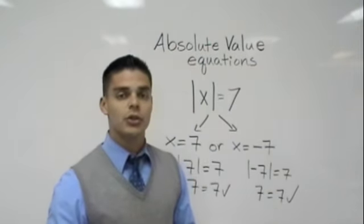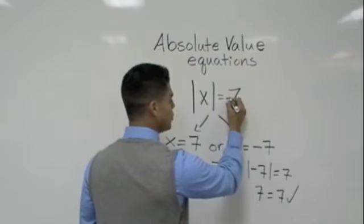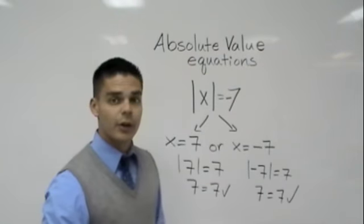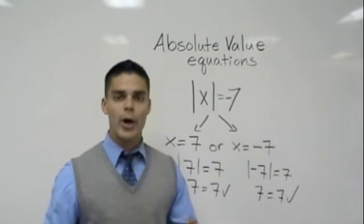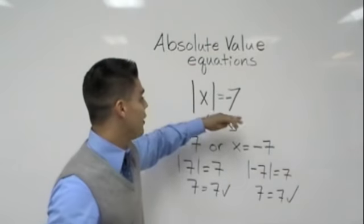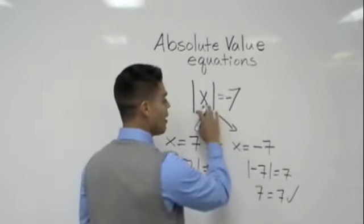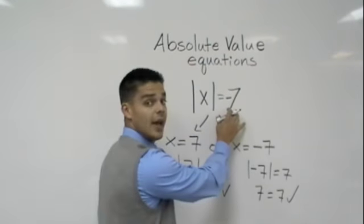One thing I do want you guys to notice is this. If for some reason you ever have an absolute value equal a negative, right away I want to hear alarms in your head going off saying, there is no solutions to that. No solutions. So you can never have an absolute value equal a negative number.